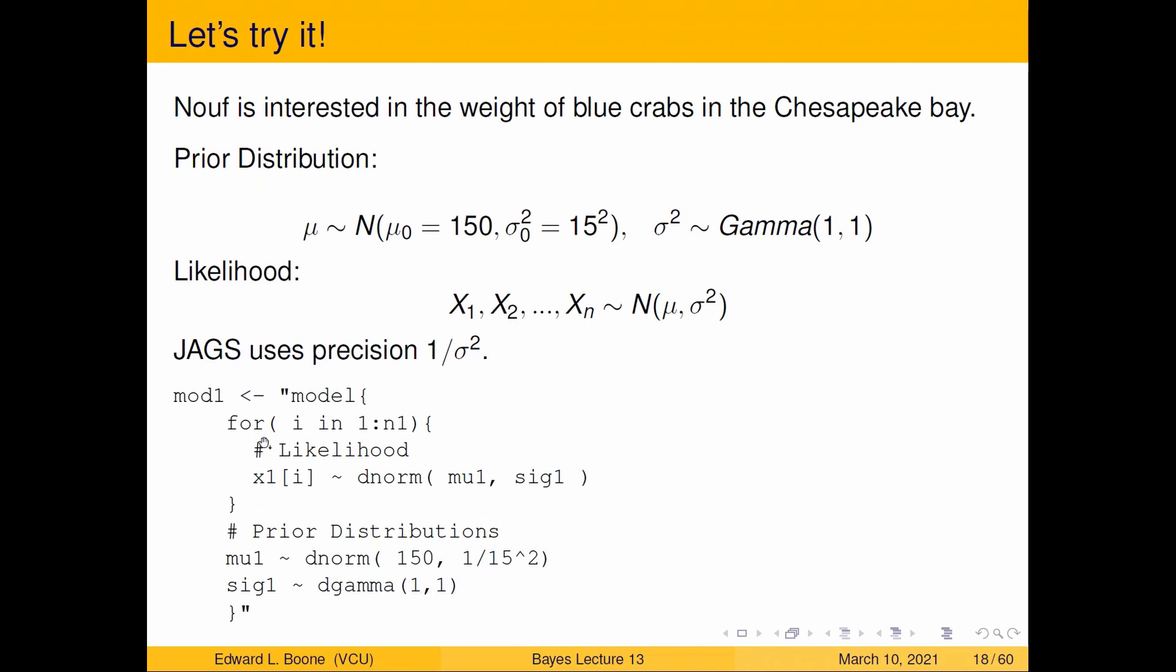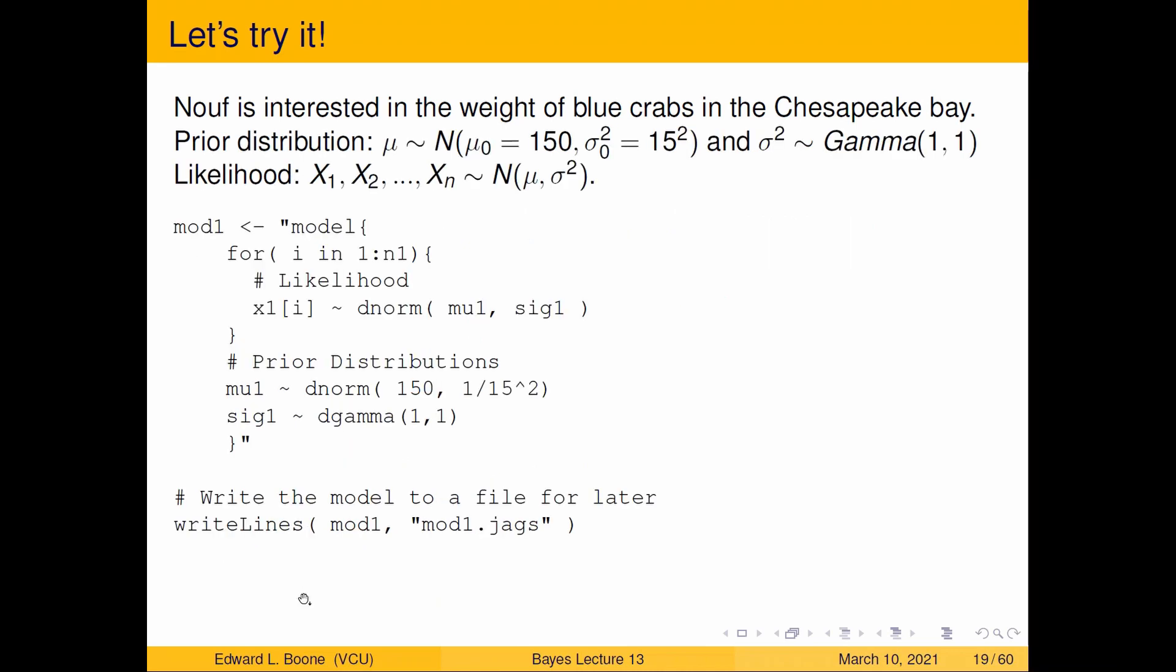So that's our model statement here. We have to make sure we get it right. Take a moment, maybe pause the video to make sure you type this in correctly. Because then the next thing we're going to do is we're going to write it out to a file. So I just compacted all this down. This is the same code as last time, but we're going to write lines this mod1 to mod1.jags. Whatever your working directory is, is where this is going to go. This is the name of your model on the machine, and you're going to have to remember that because JAGS is going to want to know where that is.